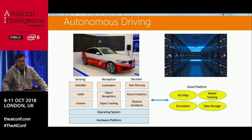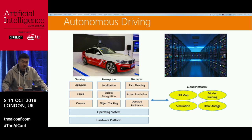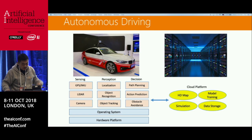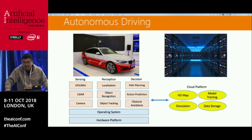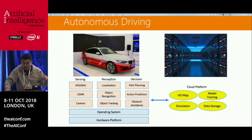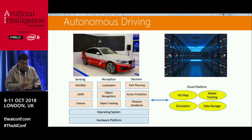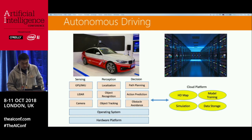A lot of people want to talk about autonomous driving as if it's all about the algorithm. But underlying it, the hard part is how you integrate all these services onto a computing system that can run on the car. That involves the design of the operating system and the design of chips. Something people don't often talk about is the cloud — you need a lot of cloud support for HD map generation, model training, data storage, and simulation.